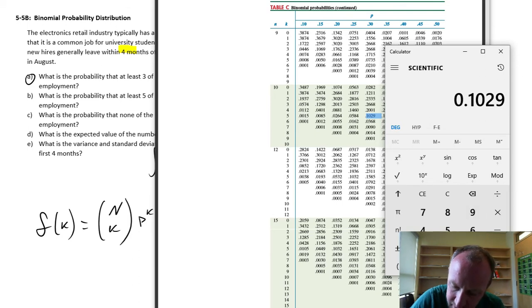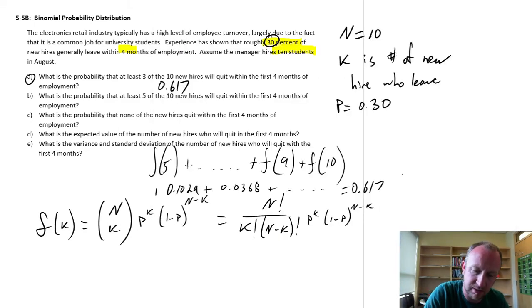So, I'm just going to add up those probabilities. .1029, plus .0368, plus .009, .0014, and .001, so 15. So, much less probability, a much lower chance of 5 of them leaving, but still a 15% chance that at least 5 of the new hires will quit in the next 4 months.